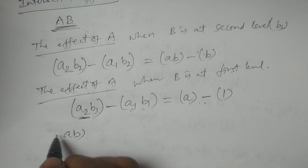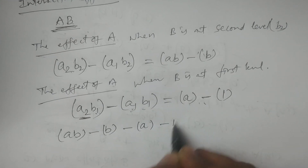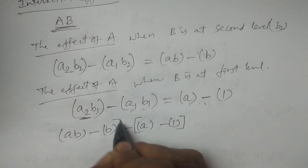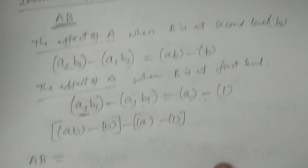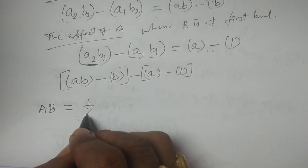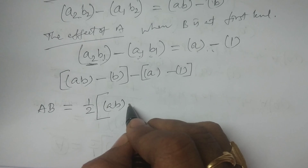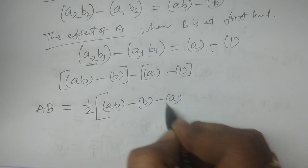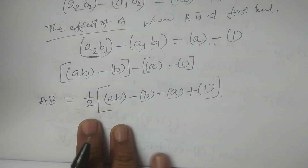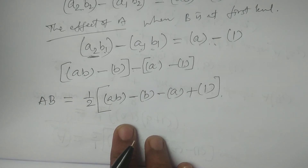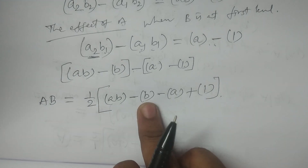Therefore, the interaction effect of AB is nothing but (1/2) multiplied by AB — that is, the average yield of AB — minus B minus A plus 1. So: AB = (1/2)(AB − B − A + 1).